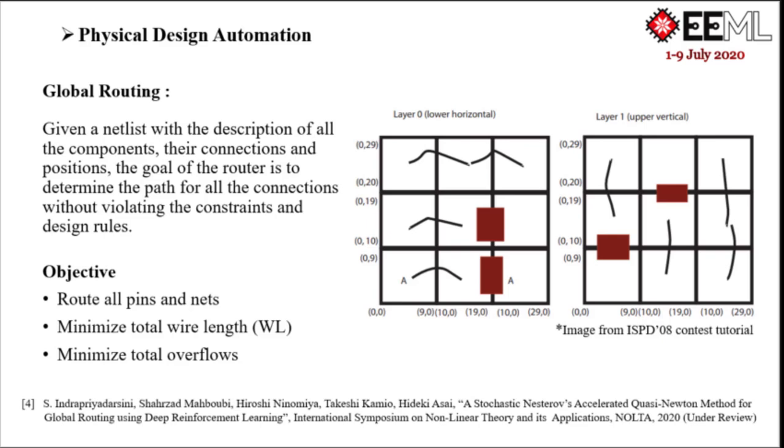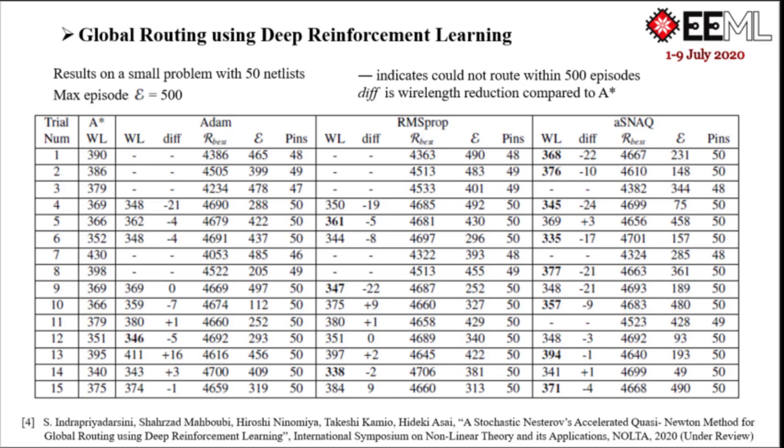The results show promising scope compared to the conventional A-star path search method and DRL models trained with popular first-order methods. In the future, I intend to work towards building a robust RL framework that can give faster and reliable placement and routing solutions for larger netlists. Thank you.